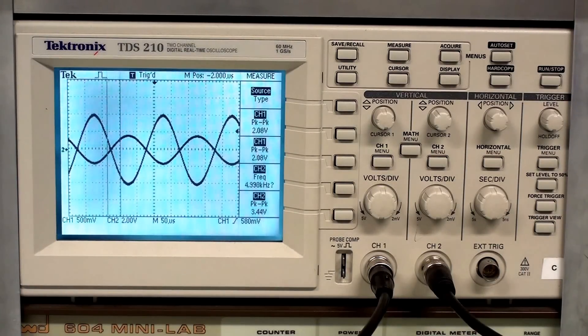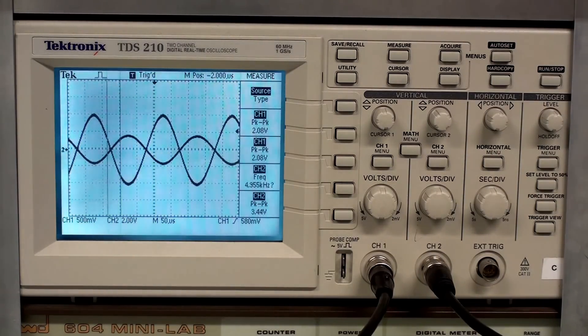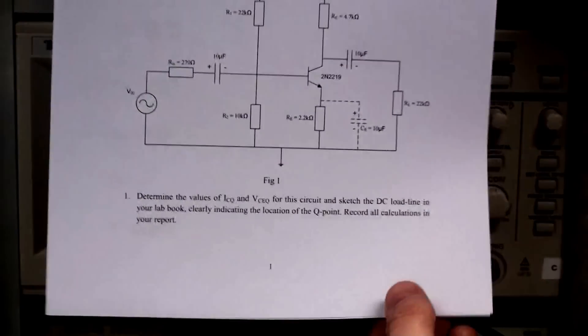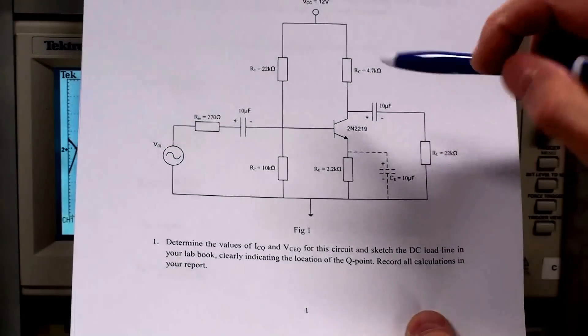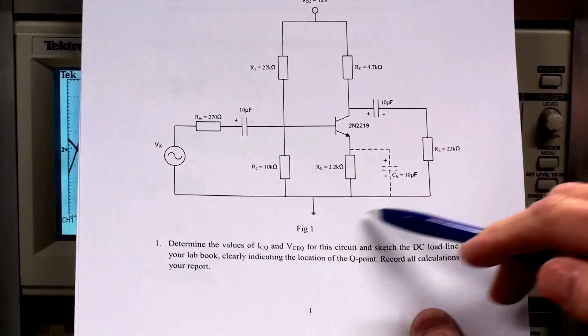OK, this is experiment A1, the common emitter amplifier circuit. Just to remind ourselves of the circuit, this is the circuit here. You're given this circuit here and you need to connect it up as shown there.